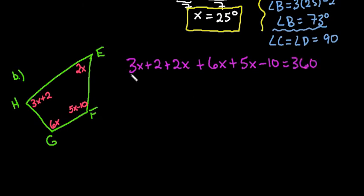And so then we would add all of our variable terms first. So 3 plus 2 would give me 5, 5 plus 5 is 10, and 10 plus 6 would give me 16x. Then we would add our constant terms, so I would take the positive 2 minus 10, which would give us negative 8, and this equals 360 degrees.